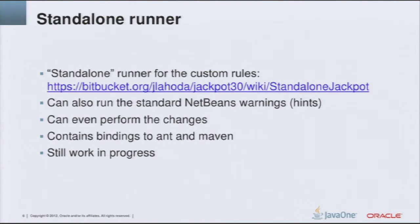This standalone runner is basically a very stripped-down version of NetBeans packed into one jar that can be easily run. It can execute the rules and can also run standard NetBeans warnings. It can even perform changes — if you have some rules that actually do some changes, then the tool can actually do them to the code. There are bindings to Ant and Maven for this standalone runner. I should warn you that this is still a work in progress and there is still a lot to do in the future.